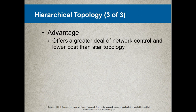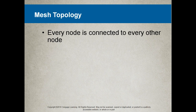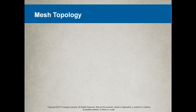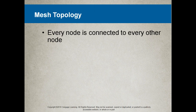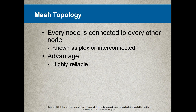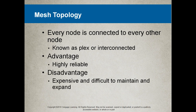You might want to do a Google search to see a picture of what a hierarchical topology looked like, but concentrate on bus, star, and ring — those are the primary ones you will see in the world. The mesh topology is how the internet is made up. Every node is connected to every other node — a node being a computer or a router — also known as plex or interconnected. Advantages: highly reliable. Disadvantages: expensive and difficult to maintain and expand.